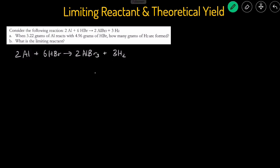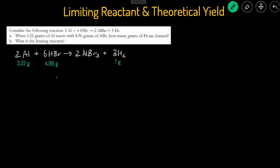I've rewritten the reactants and transferred the numbers underneath the reactants and products: 3.22 grams of aluminum reacting with 4.96 grams of HBr, and we want to find how many grams of H2 will be produced. This is a limiting reactant problem because we're given a finite amount of both reactants. One reactant will run out first — that's the limiting reactant — and it determines how much product is produced, since the reaction stops when it's consumed.